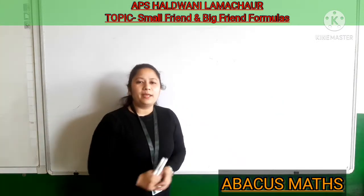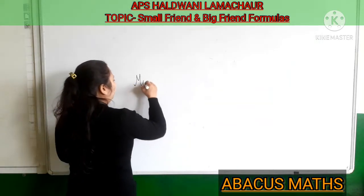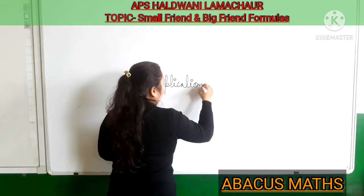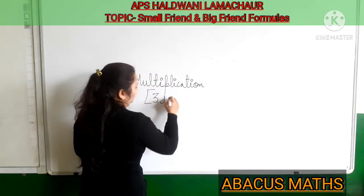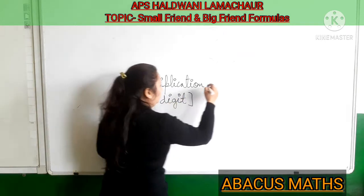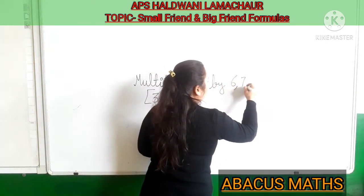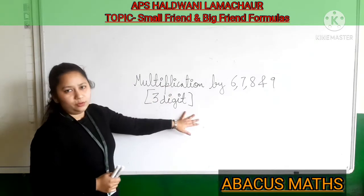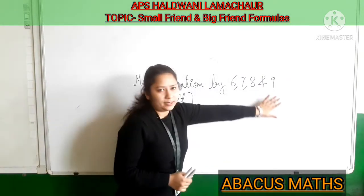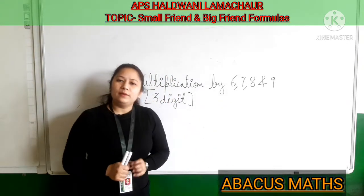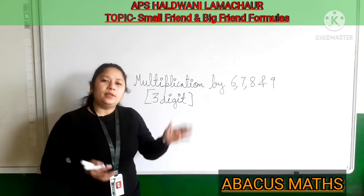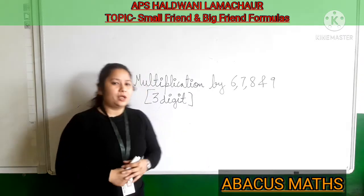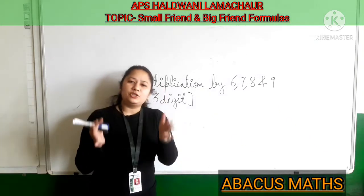In our last topic we discussed multiplication of a three-digit number by 6, 7, 8, and 9. We did the sums related to multiplication of a three-digit number by 6, 7, 8, and 9 in the Abacus tool, and we learnt how to multiply a three-digit number with the help of the Abacus tool. With this topic, our multiplication topic ends.